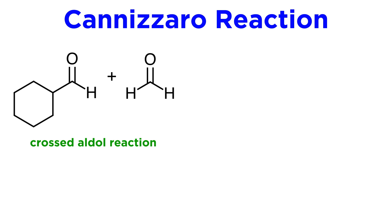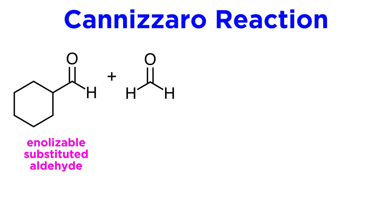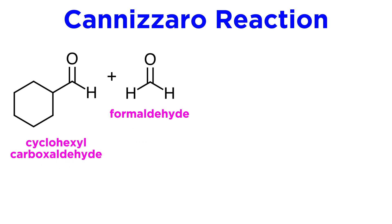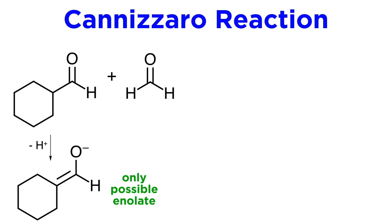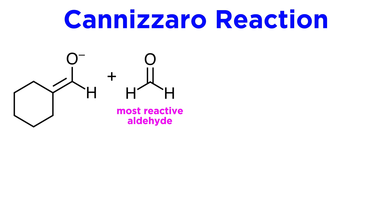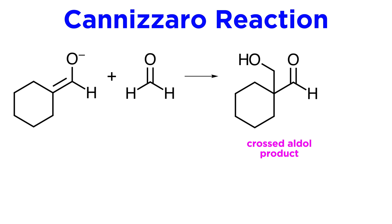A Cannizzaro reaction may be observed when carrying out crossed-aldol reactions. These reactions are very successful when an enolizable substituted aldehyde is reacted with a non-enolizable reactive aldehyde, so that a homoaldol reaction cannot occur. If cyclohexyl carboxaldehyde is reacted with formaldehyde under basic conditions, only one enolate can form, because formaldehyde has no alpha-hydrogens. The enolate of cyclohexyl carboxaldehyde will react preferentially with the much more reactive formaldehyde and not with itself, to yield the crossed-aldol product in high yield.